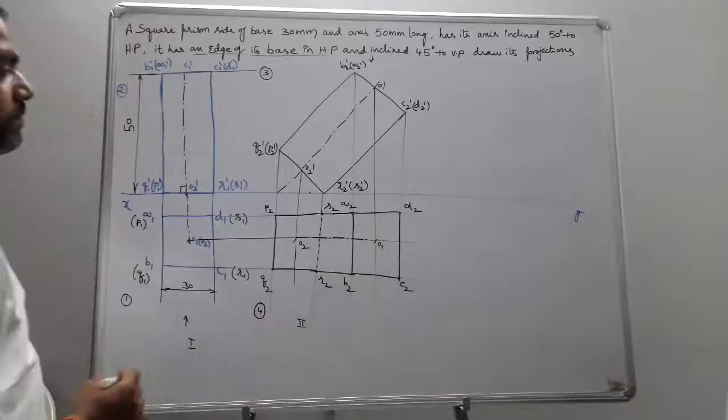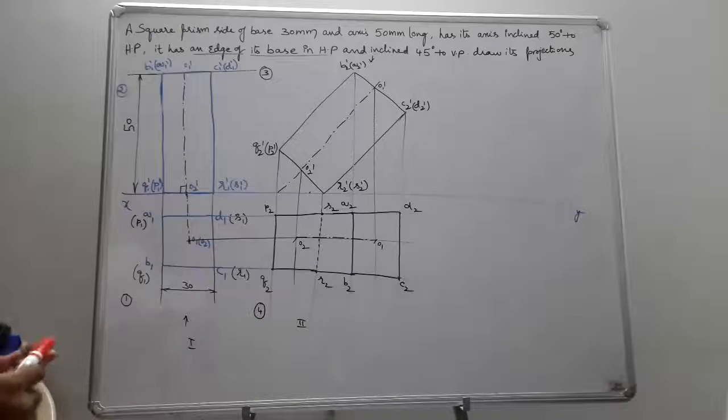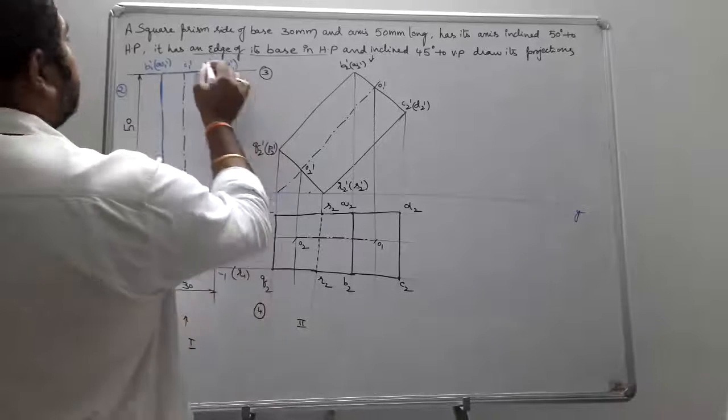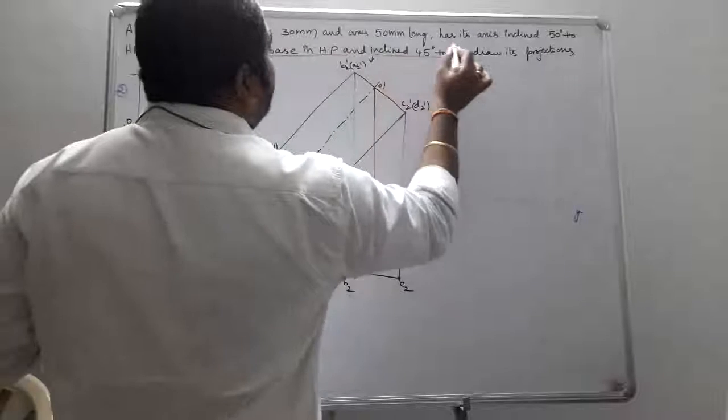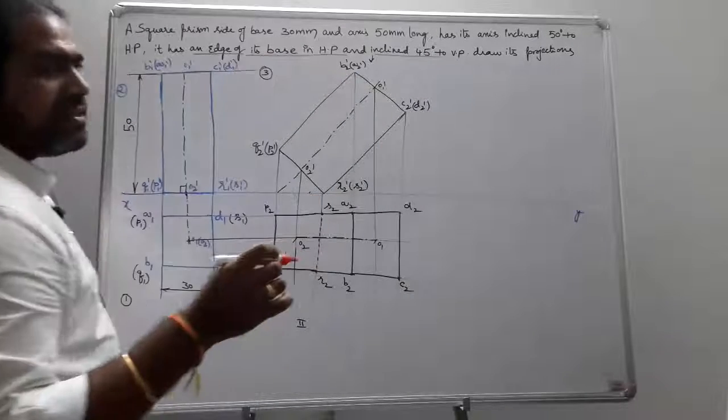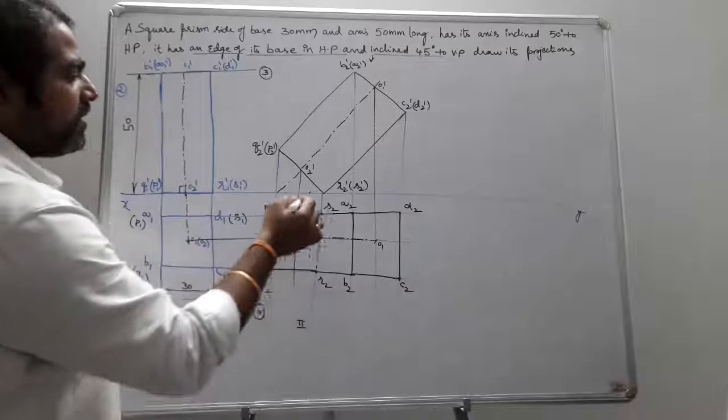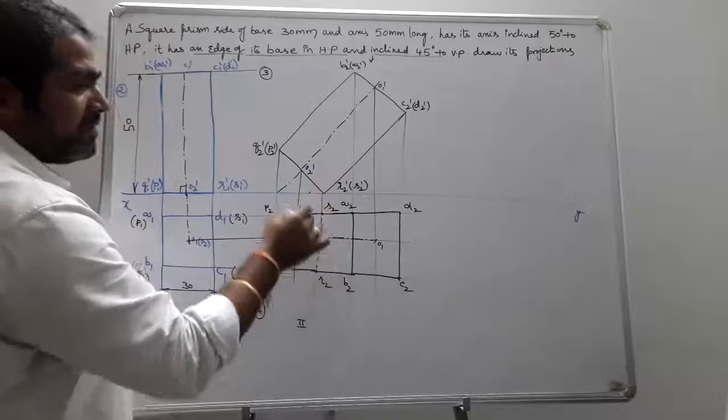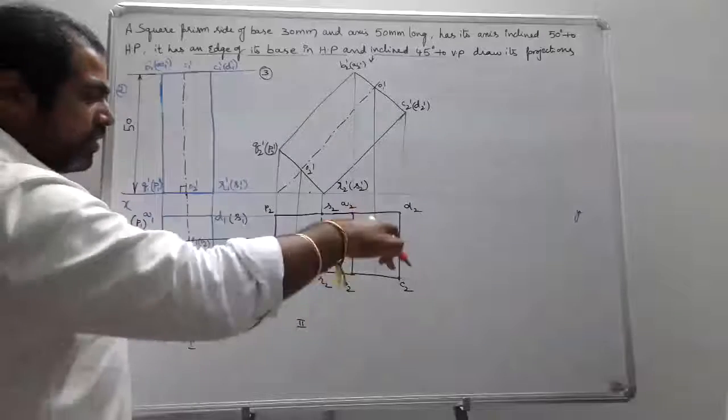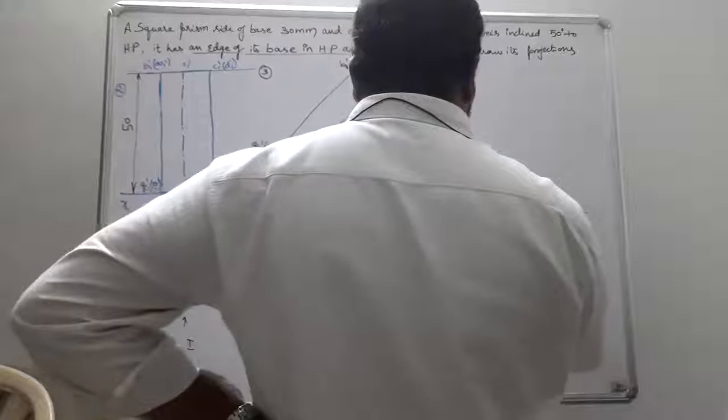Stage two. Next, tell me what is going to be stage three. Stage three is when it has an edge of its base on HP and inclines 45 degrees to VP. The edge of the base which is resting on HP is making 45 degrees. This edge RS is resting on HP, so it is tilted for 45 degrees.